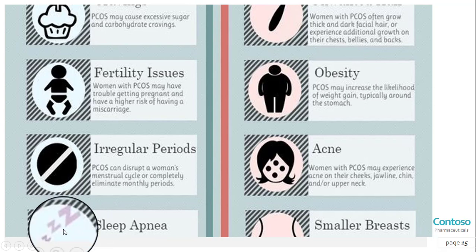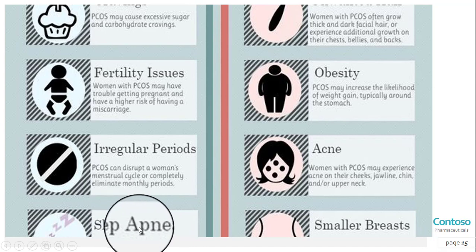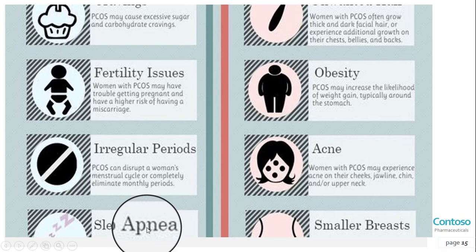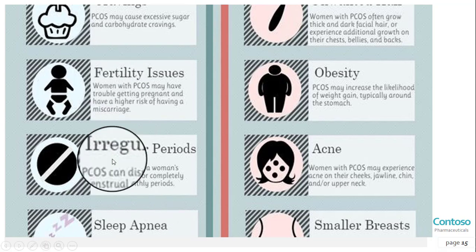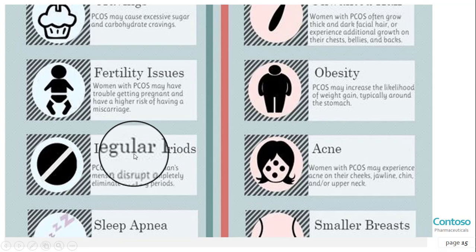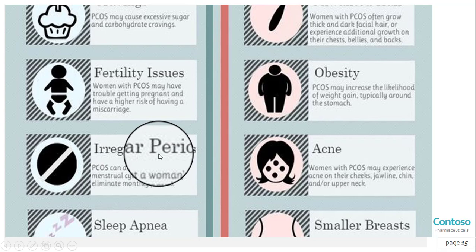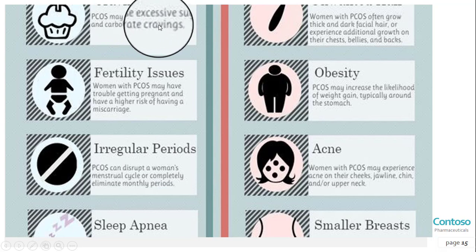The third effect is sleep apnea — this condition causes repeated pauses in breathing during the night, interrupting sleep. Sleep apnea is more common in overweight women, especially those with PCOD; the risk is five to ten times higher in obese women with PCOS. Fourth is endometrial cancer — if you don't ovulate every month, the uterine lining can build up, and a thickened lining increases your risk. Fifth is depression and anxiety, triggered by hormonal changes and symptoms like unwanted hair growth.